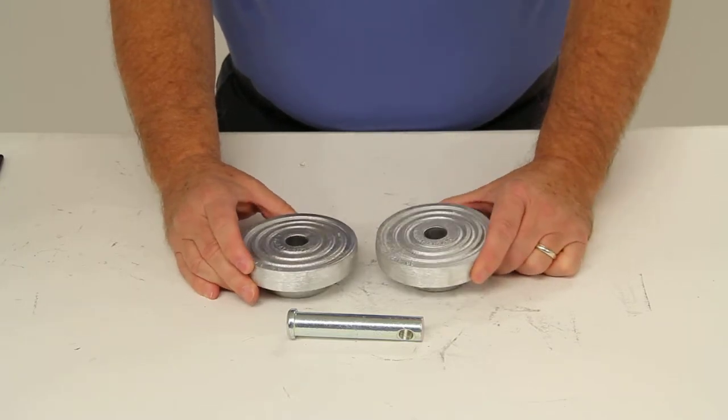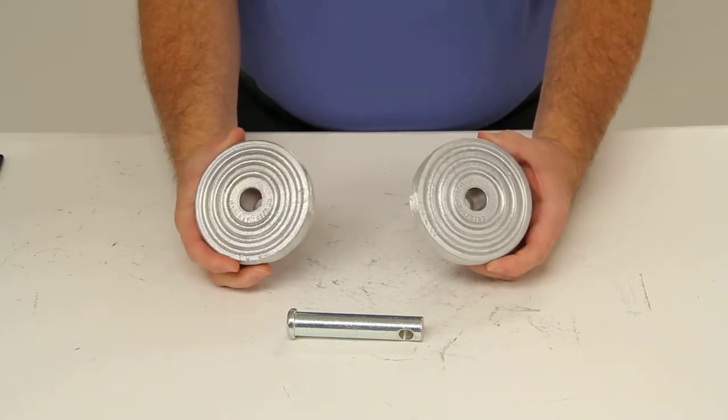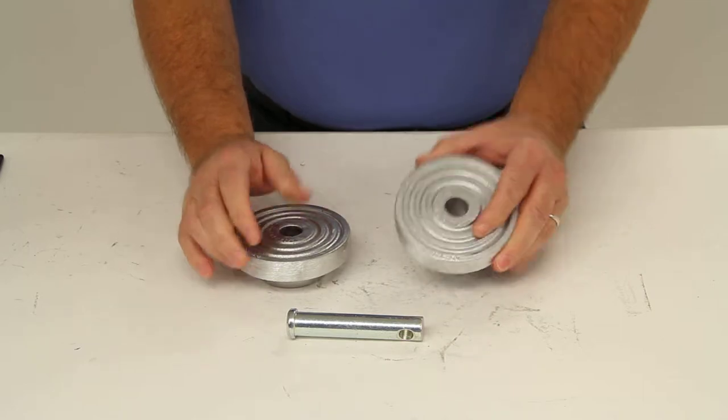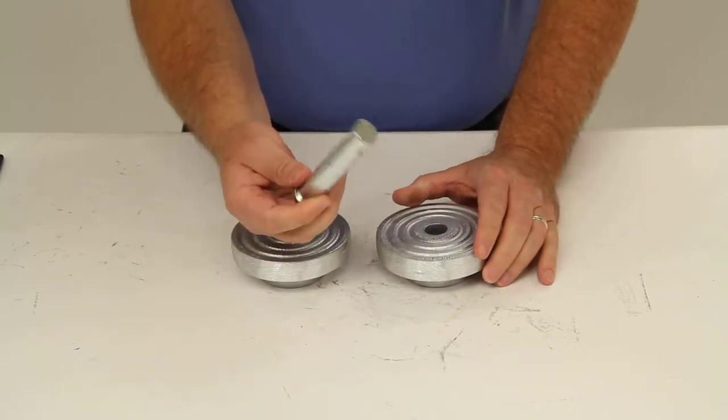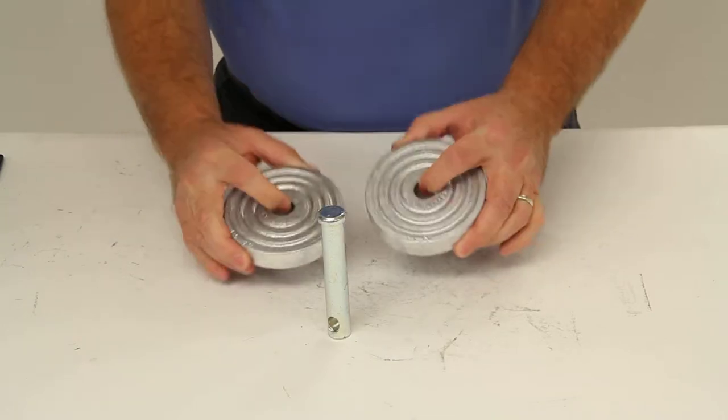This will contain three pieces. There's two aircraft grade lightweight aluminum pieces, which are strong, durable, and rust resistant. And then there's the three-quarter inch diameter steel pin, which will slide through the center of both of these pieces.